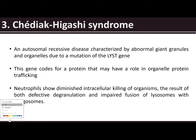In Chediak-Higashi syndrome, this is an autosomal recessive disease characterized by abnormal giant granules and organelles due to mutation of the LYST gene. These genes code for a protein that may have a role in organelle protein trafficking. Neutrophils show diminished intracellular killing of organisms, resulting in both defective degranulation and impaired fusion of lysosomes with phagosomes. The appearance shows abnormal, usually large WBC granules.